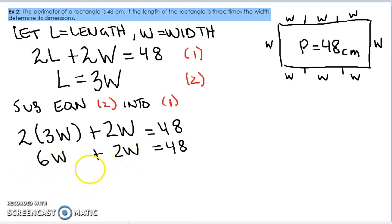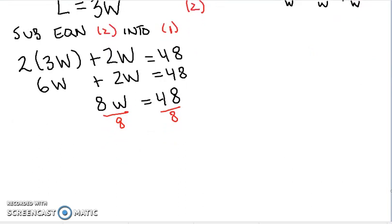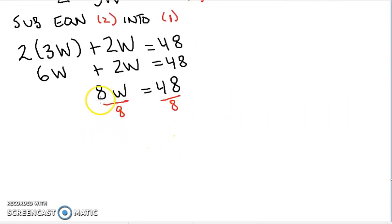Or in other words, 6W plus 2W is 8W is equal to 48. Now you can see, this is where that 8 lots of widths come from. 1, 2, 3, 4, 5, 6, 7, 8. So this is why 8W, or 8 lots of widths, is equal to 48. Okay, we can go ahead and now solve for W. And this should be second nature right now. It should be pretty fluent at solving these equations. So divide by 8, divide by 8, cancel, cancel, W is equal to 48 divided by 8, so we have 6.